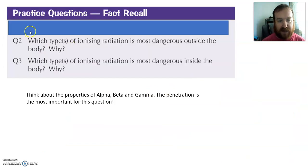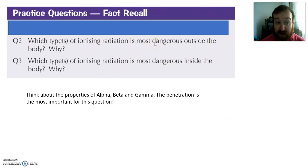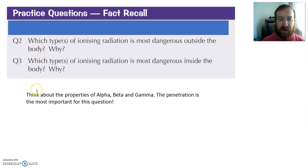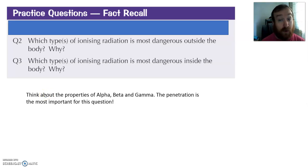This is our last little task and I've got the answers on the next slide. Which type of ionizing radiation is the most dangerous outside the body, and why? Which type or types of ionizing radiation are the most dangerous inside the body, and why? Try to answer these two questions — think about the properties of alpha, beta, and gamma. The penetration of each is the most important idea in answering these questions. Pause the video and see if you can answer them — a short sentence for each.